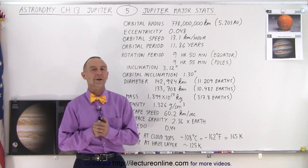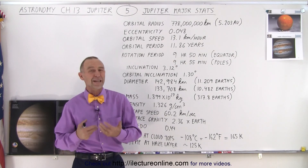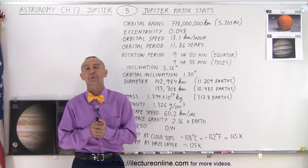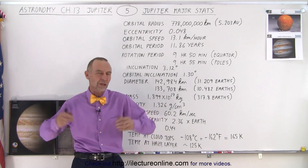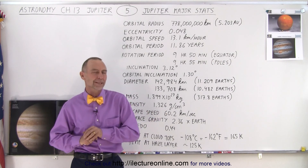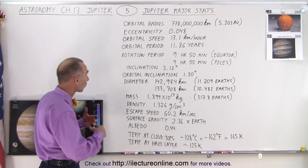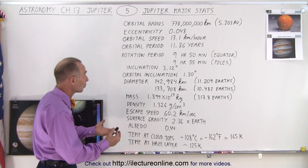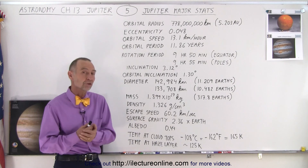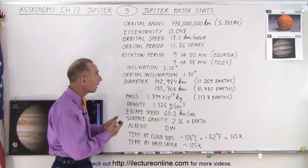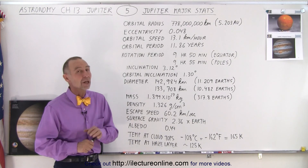Welcome to iLecter Online. Now let's take a look at the major stats of the planet Jupiter — the major numbers that we associate with every planet. Beginning with the orbital radius, it's about 5.2 astronomical units away from the Sun, at about 778 million kilometers.